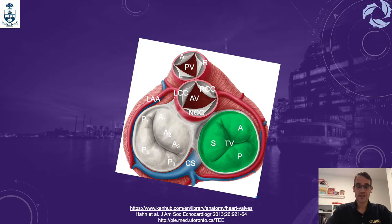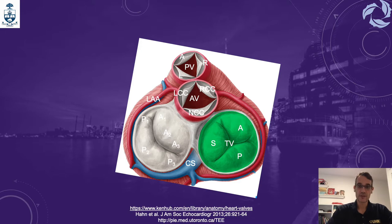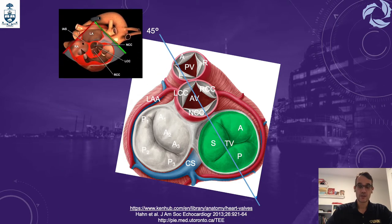To understand how to assess an aortic valve prosthesis, it is important to remember the anatomical planes. In this presentation, I present this from an auricular view into the ventricles, removing the atria from the heart and looking down to the ventricles. At 45 degrees, we can see the mid-esophageal short axis view of the aortic valve, where the left coronary cusp is next to the pulmonary valve and the right and non-coronary cusps are close to the tricuspid valve.